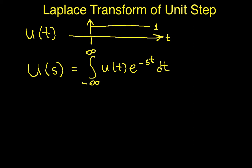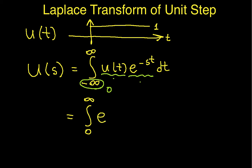To do the computation, I'm going to take the e to the minus st and multiply it by U of t. U of t is 1 as long as t is greater than 0 and 0 as long as t is less than 0. So the first thing I can do is take this lower limit of integration and replace it by 0, because U of t is 0 for values of t less than 0, so the product of U of t and e to the minus st is also 0. Using that, and the fact that U of t is 1 for t between 0 and infinity, I can write this as the integral from 0 to infinity of e to the minus st dt.